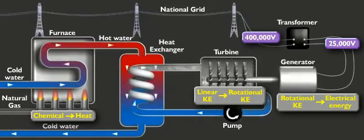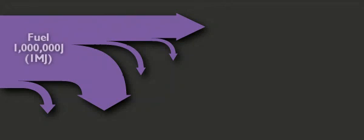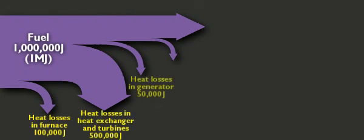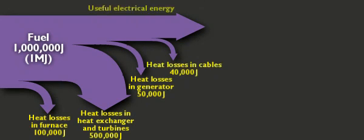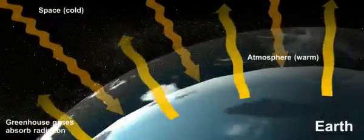Before transmission to the grid, energy loss at power stations: even at high voltages, the generation and distribution of electrical energy is a very inefficient process. The Sankey diagram shows typical energy losses for a fossil fuel or nuclear power station.